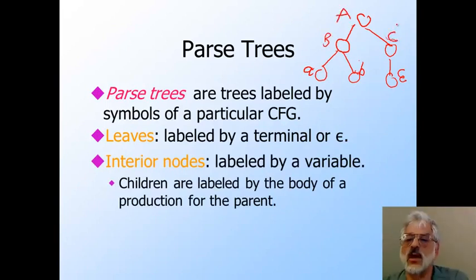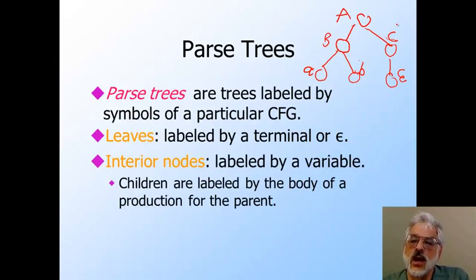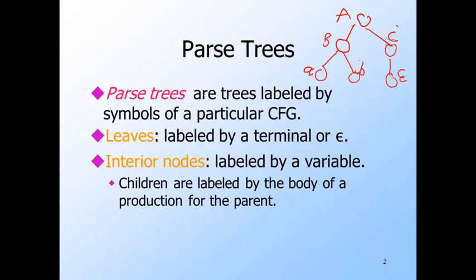The important property that makes a tree a parse tree is that there is a production of the grammar with the label of the node in question as its head, and the labels of its children read left to right as its body. For example, looking at a parse tree, we would infer that A goes to BC is a production, B goes to little a little b is a production, and C goes to epsilon is a production.